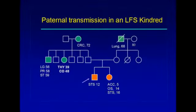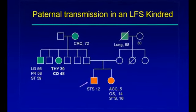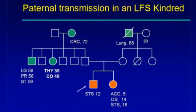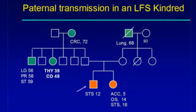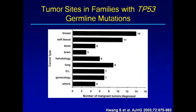Li-Fraumeni syndrome has been near and dear to our hearts at the Farber — Fred Li was there, Louise Strong studies this at Memorial, and Gail Tomlinson studies it at San Antonio. Li-Fraumeni families are rare but not that rare: approximately 1 in 25,000 individuals carries a germline P53 mutation. The manifestations include risk of many different cancers — childhood cancers, sarcomas, and almost every adenocarcinoma. P53 is often an issue in many tumors, and the problem with having a P53 mutation is that your cancer risk is in essentially every cell of your body.